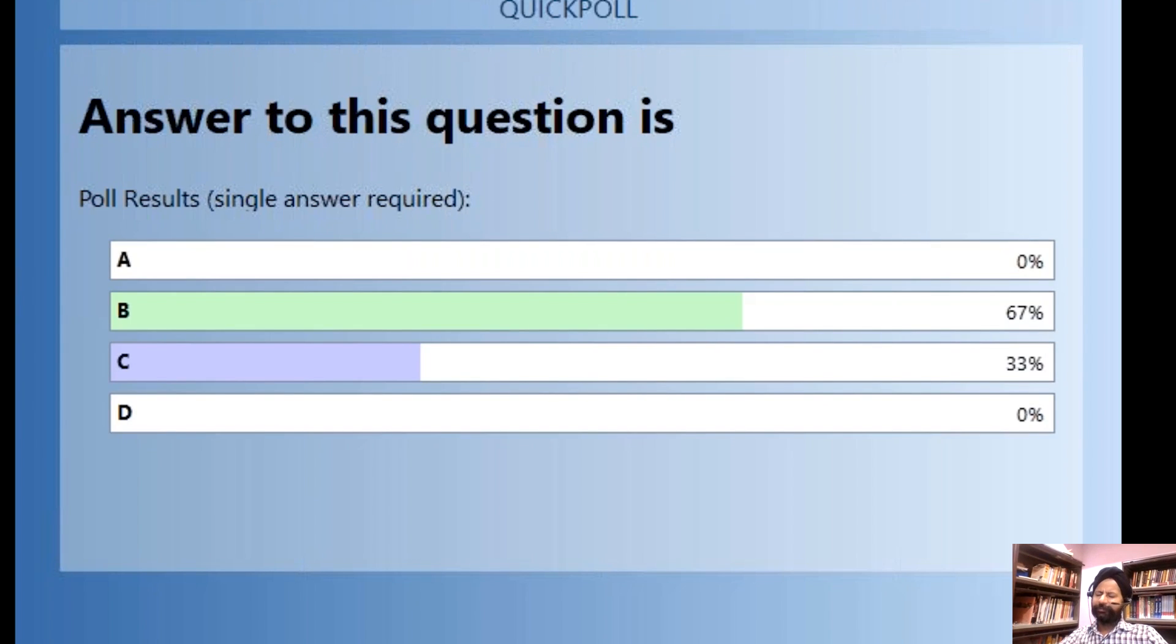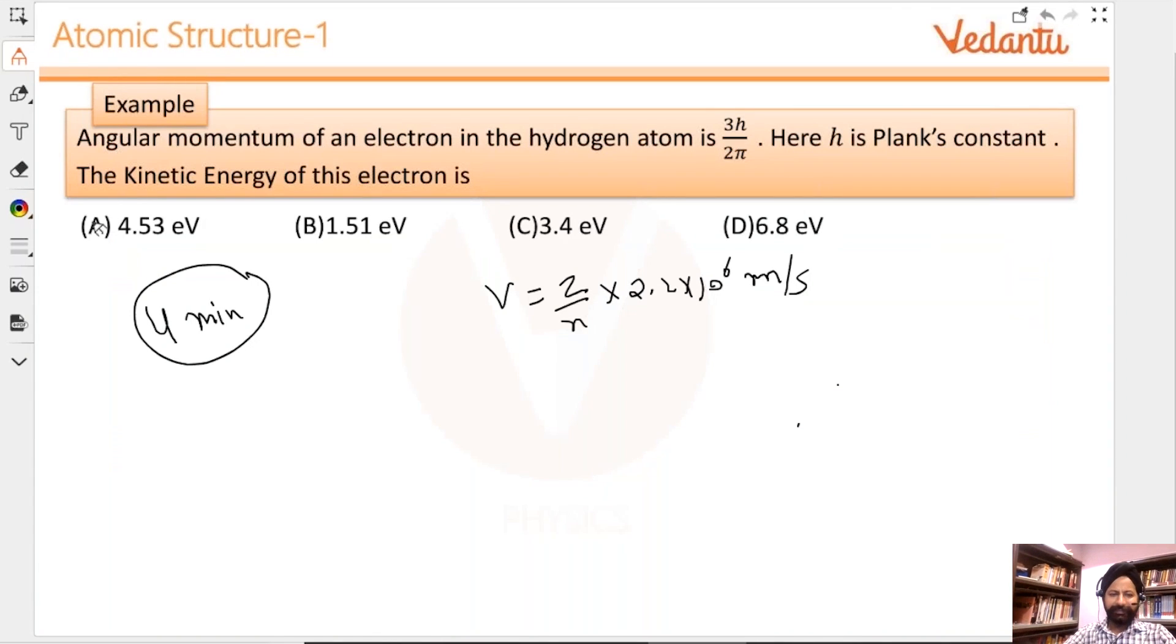Okay, so this is the right answer - B. Most students are saying B. Yes, it is B. Let's do it together, please look here. Angular momentum of electron is given, which gives a good clue that n equals 3. Remember, angular momentum is n times reduced Planck's constant. They're telling you n is 3.